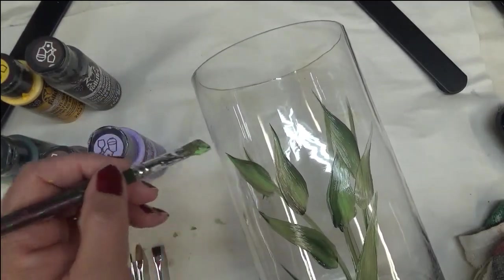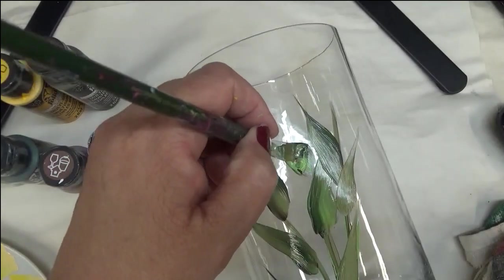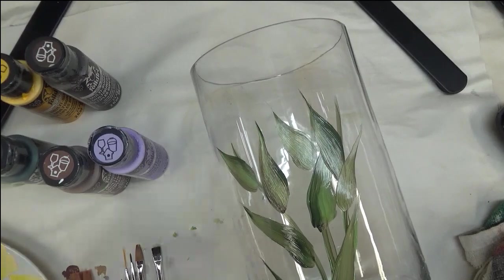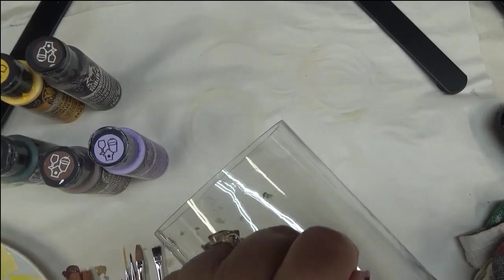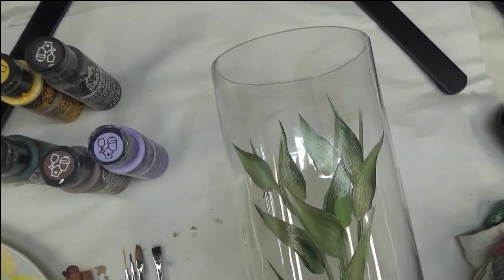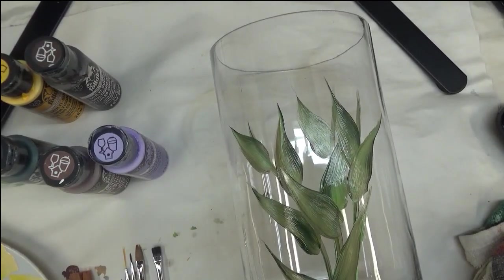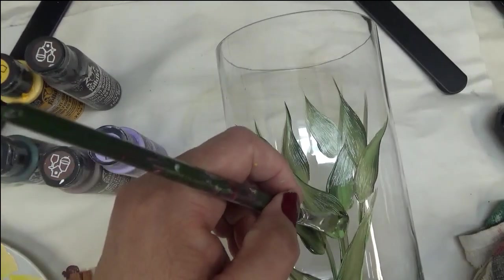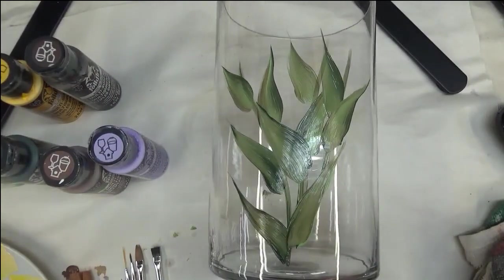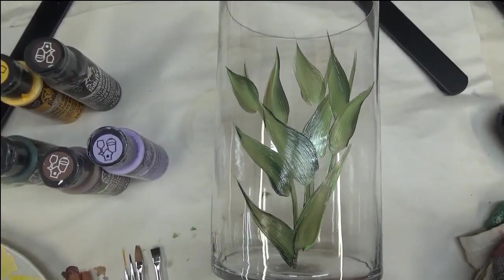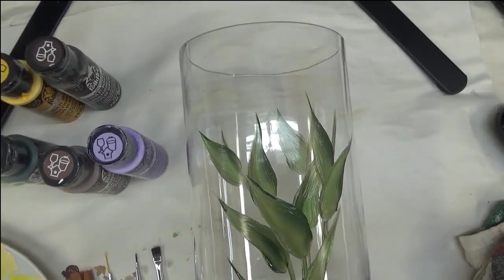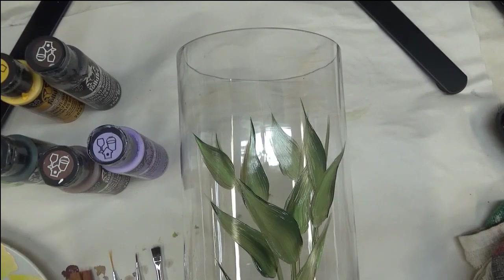I'm basically just putting some leaves in here to get started with. Some of them will be darker than others. When you're finished putting in the flower part, you can go back over what's showing. I'm a very big leaf person, so you will see me doing a lot of leaves. I went ahead and hit this with the heat gun just so that it's not as wet.